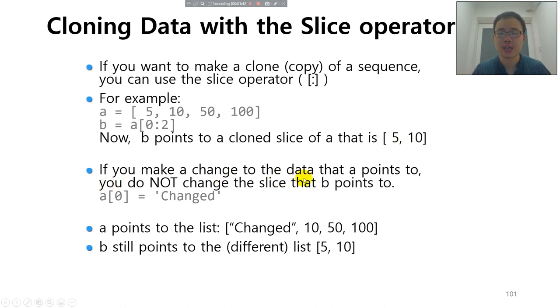If you make a change to the data that A points to, you do not change the slice that B points to. So if you change 5 to 'changed' for A, you do not find that B changes. It's still 5, 10.